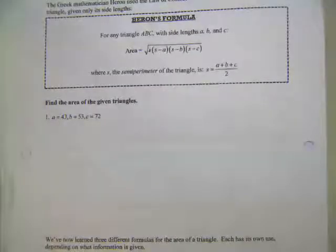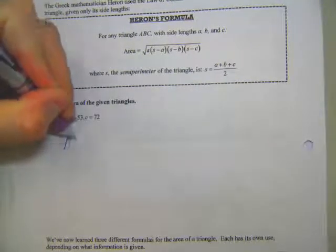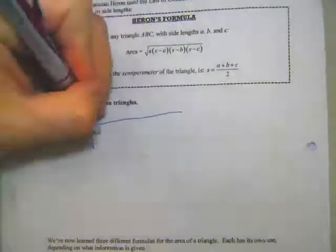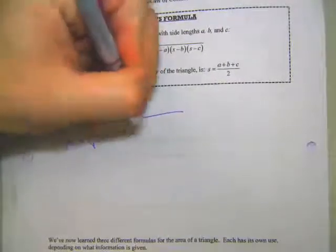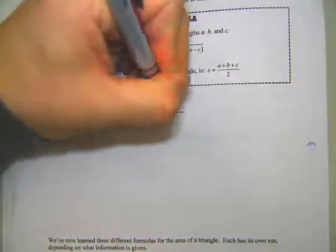So if we're trying to find the area of this triangle, the area is going to be the square root of s times s minus a times s minus b times s minus c.